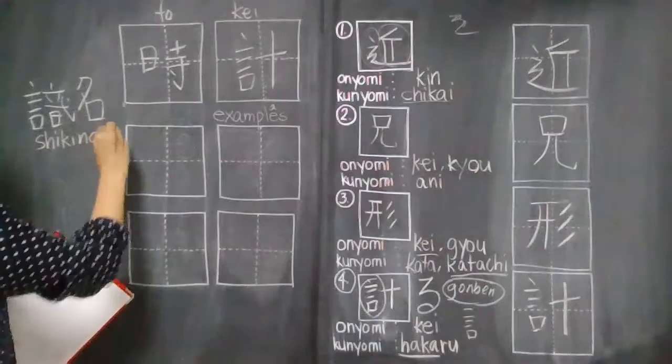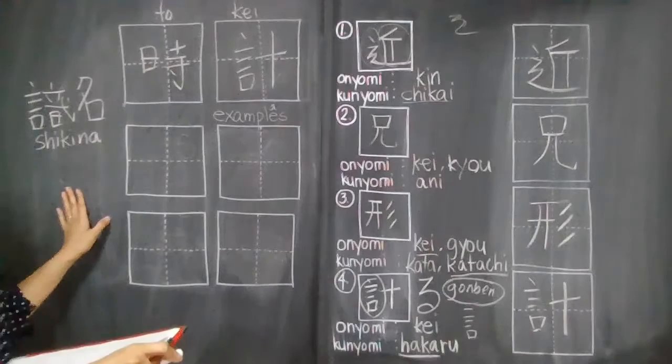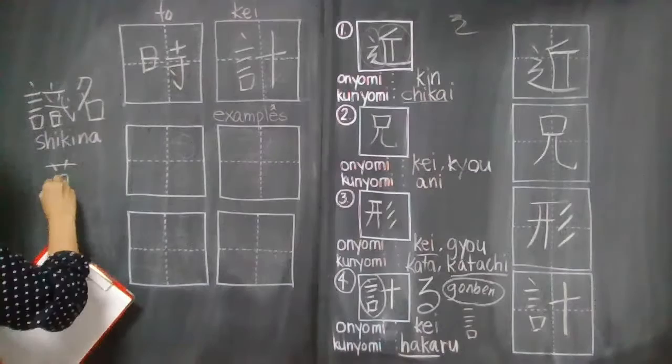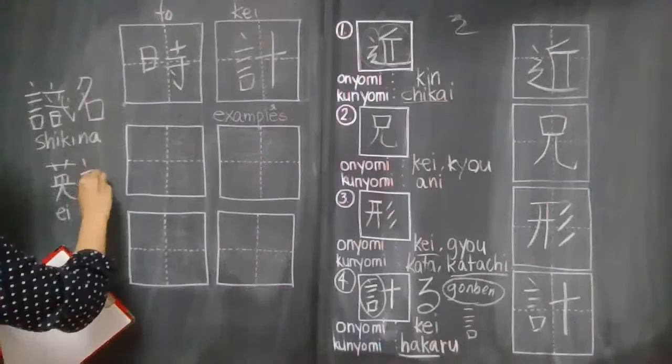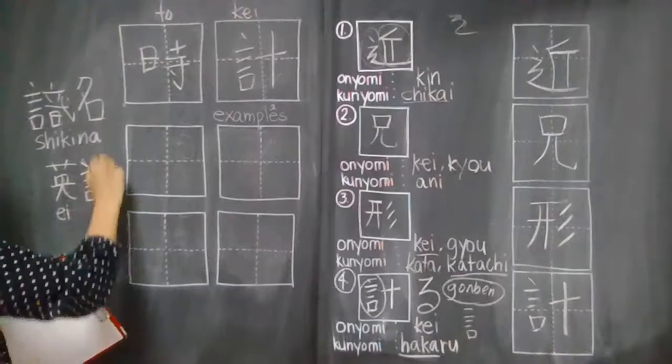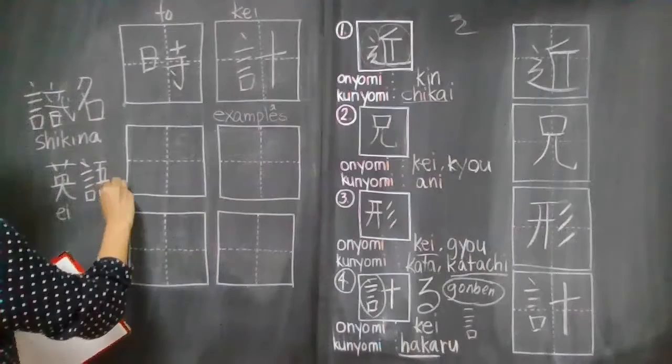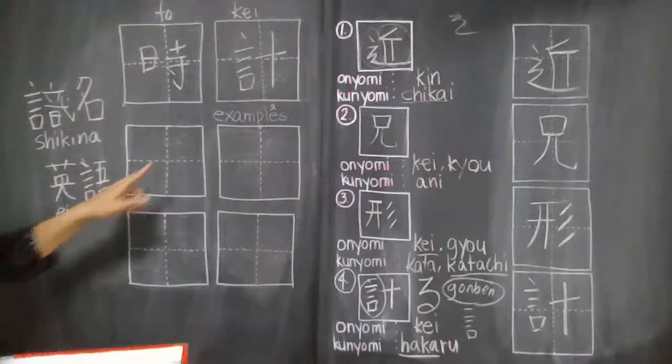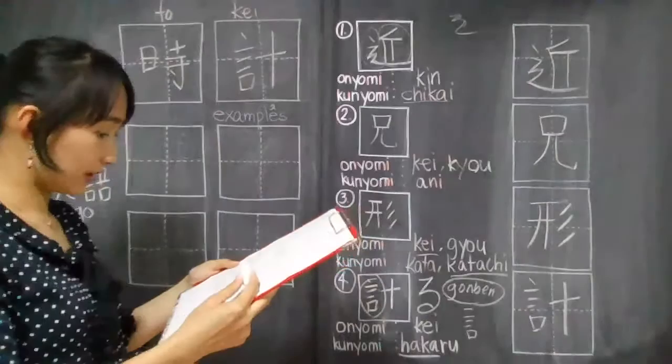I just want to share with you the other kanji characters that have this gonben. For example, shikina. Shikina is the place where we live. This is already shikina. This is already shiki, and then na is the kanji for namae. And the other one is eigo or English. So this is already e and then go. We also have gonben and then this. Eigo means English.